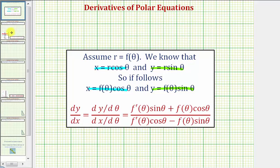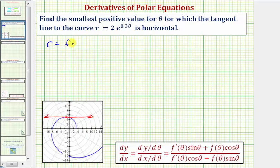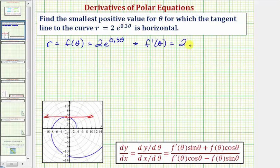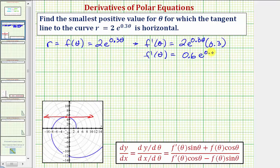So going back to our example, we have r equals f of theta, which is equal to two times e raised to the power of 0.3 theta. And therefore, f prime of theta is going to be equal to two times e raised to the power of 0.3 theta times the derivative of 0.3 theta with respect to theta. So f prime of theta equals 0.6 e to the power of 0.3 theta.